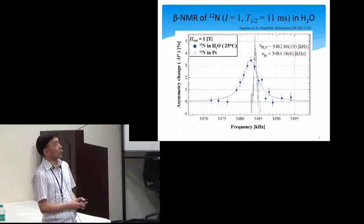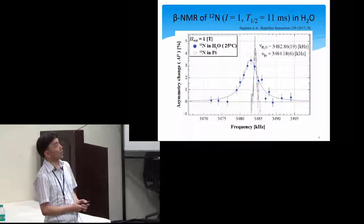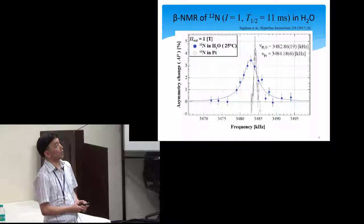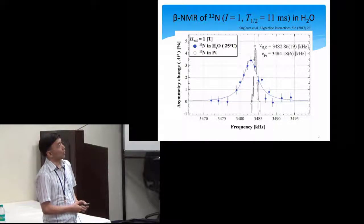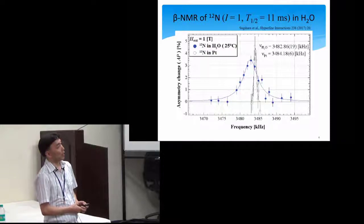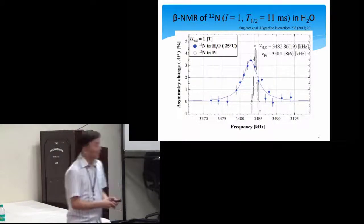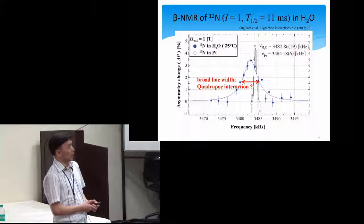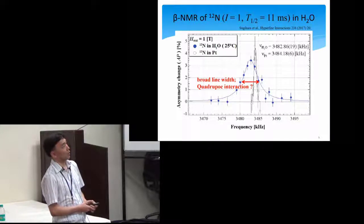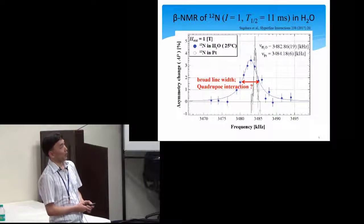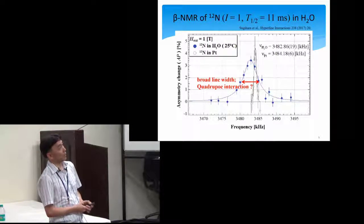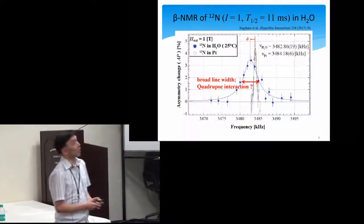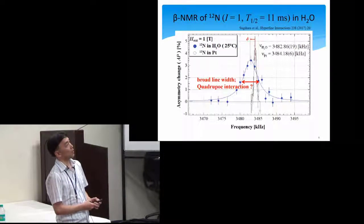This is the result of NMR spectrum of nitrogen-12 in water, which is presented in the previous conference. We could obtain this spectrum, but the resonance line is a little bit broad, probably due to the quadrupole interaction. And this is the NMR spectrum of nitrogen-12 in platinum, which is much narrower. But anyway, we could observe the shift like this.